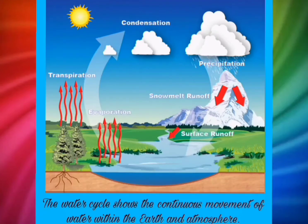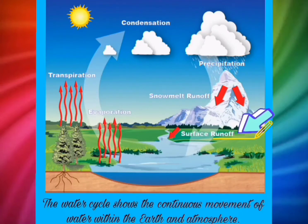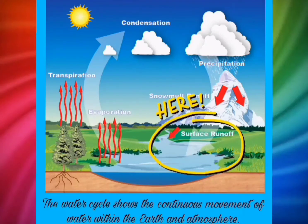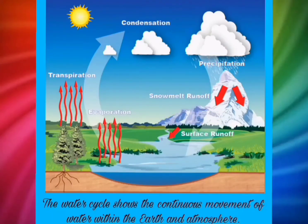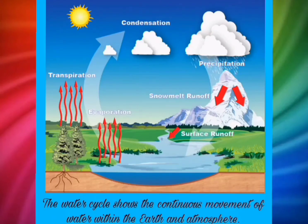When condensation particles grow too large, water precipitates back to earth in the form of rain, hail, snow, or sleet. Runoff takes place when excessive precipitation means the ground cannot absorb any more water — rivers and lakes are the outcomes of runoff. Evaporation of this runoff into the atmosphere starts the water cycle all over again.